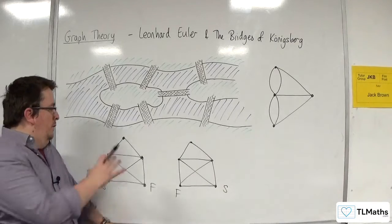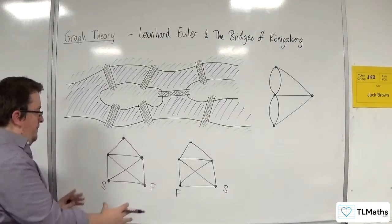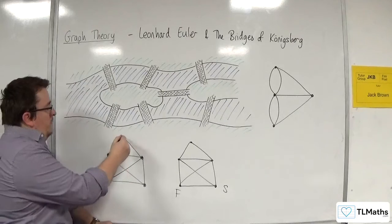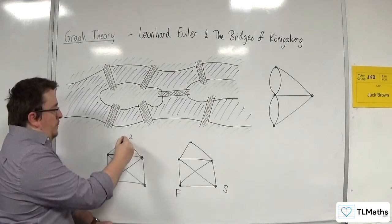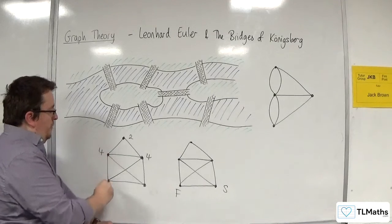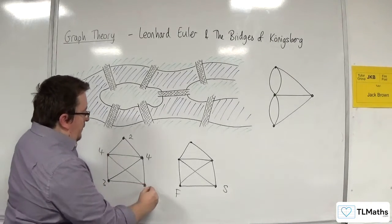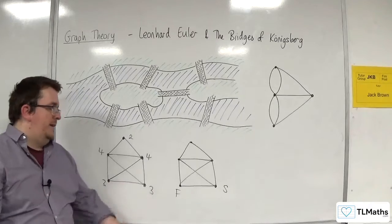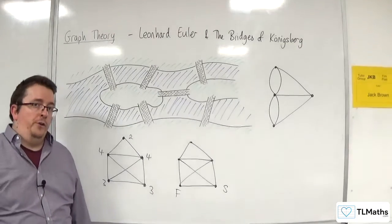Now, looking at your five vertices in total. This one has order two. This one has order four. This one has order four. This one has order three. This one has order three. So the two vertices that you can start from have odd order.